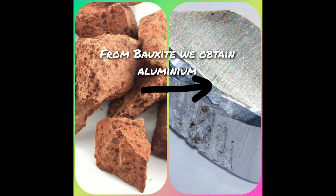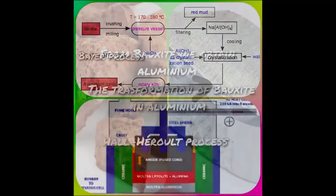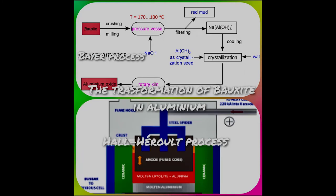To obtain aluminium from bauxite, you have to undergo two processes. The first process, where you obtain alumina from bauxite, and the second process, where alumina is merged with a special material called cryolite, to obtain aluminium. The aluminium is then melted and can be transformed into any shape desired.